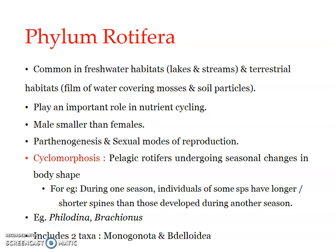Phylum Rotifera includes two taxa: Monogononta and Bdelloidea. In Bdelloidea, males are altogether absent and reproduction is completely parthenogenetic. In Monogononta, males are very rare and present only during restricted times of the year. These are the general features of phylum Rotifera.